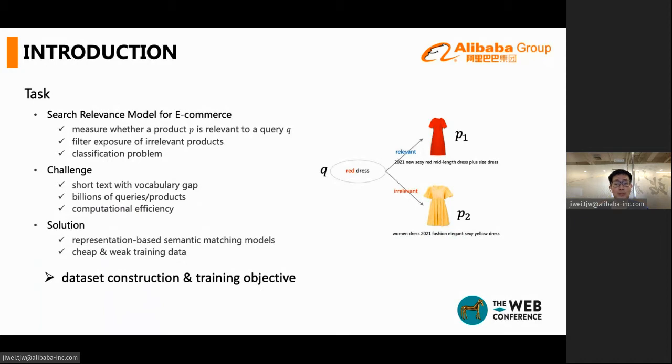Previous work usually used click-through data, like the CTR prediction task. But click is a weak signal for relevance, and how to train the relevance model from click-through data is one of the most important problems for this study. This includes the construction of data for training and the design of training objectives.